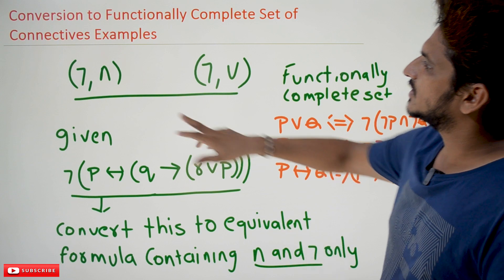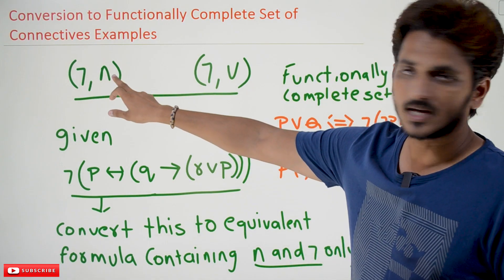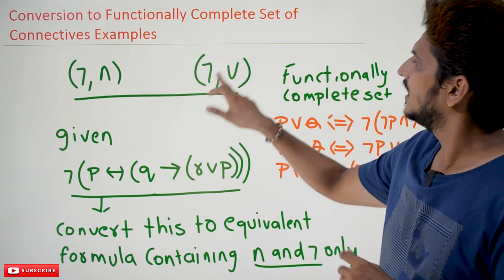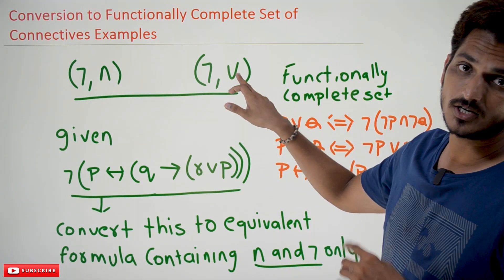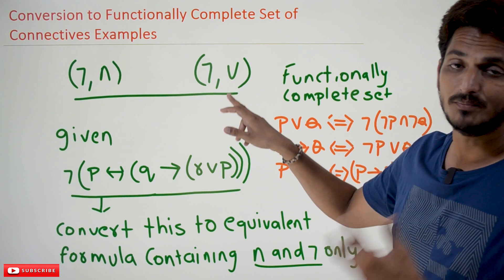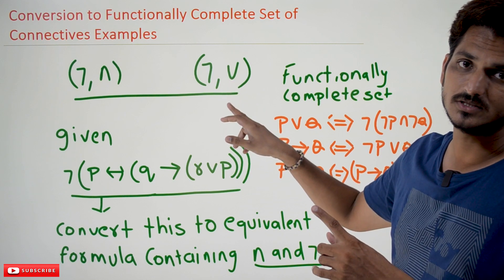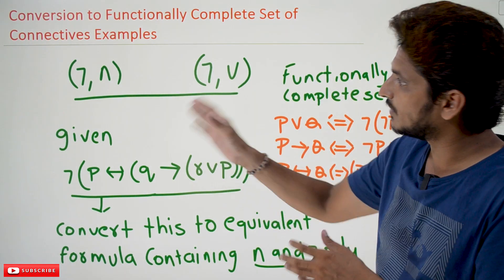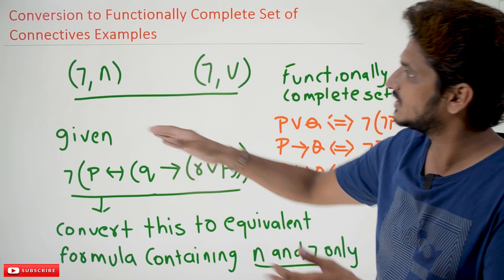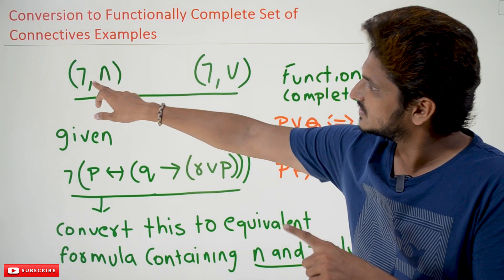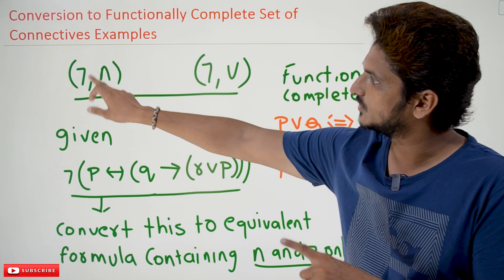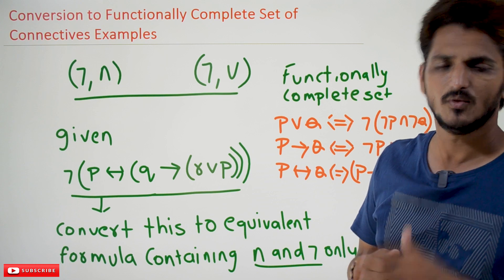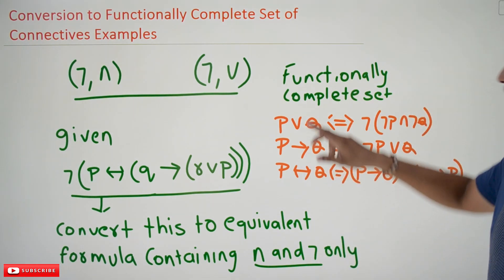Just to refresh the concept: negation and conjunction — we call it a functionally complete set. Similarly, another complete set is negation and disjunction. The meaning of a functionally complete set is that any proposition can be converted into an equivalent proposition which contains only these connectives — either negation and conjunction, or negation and disjunction. We discussed this in our last class.